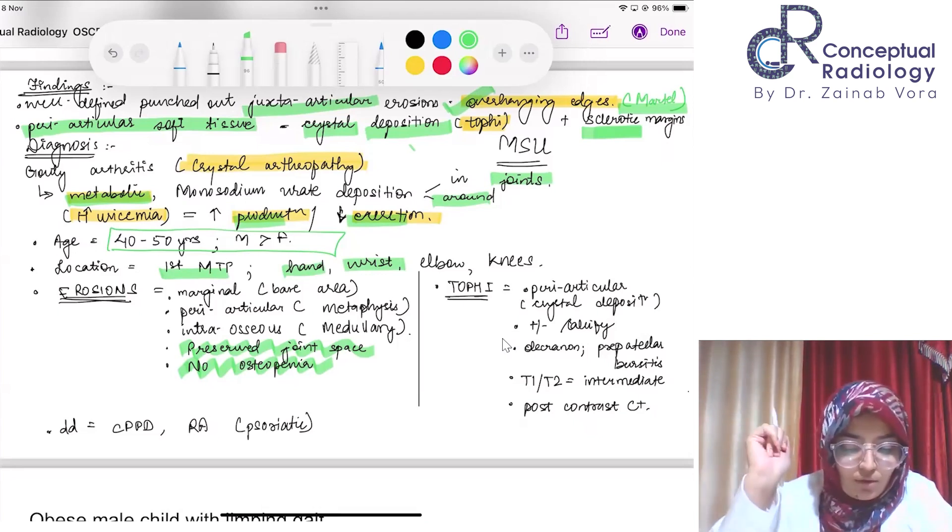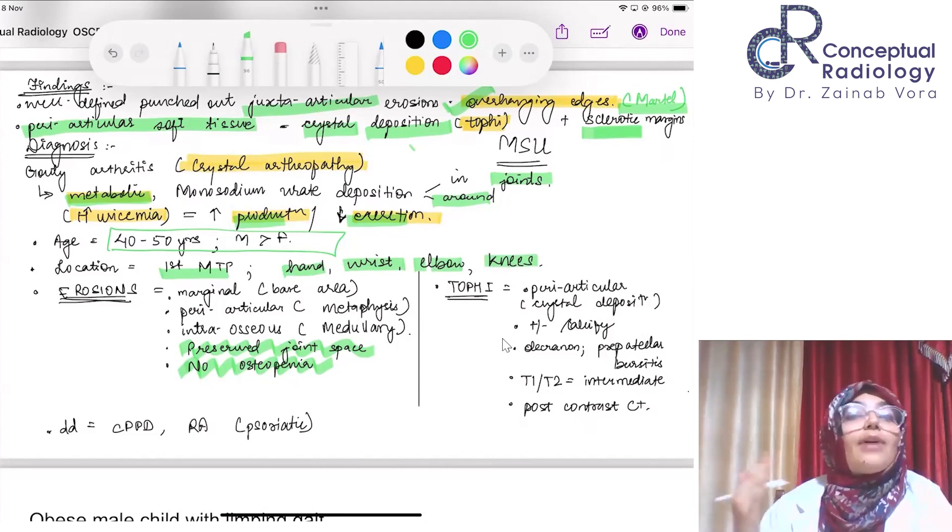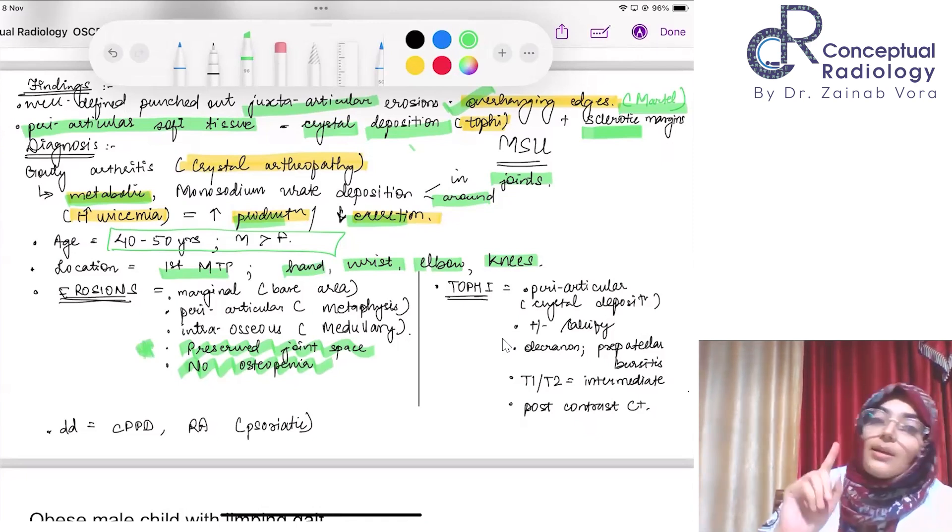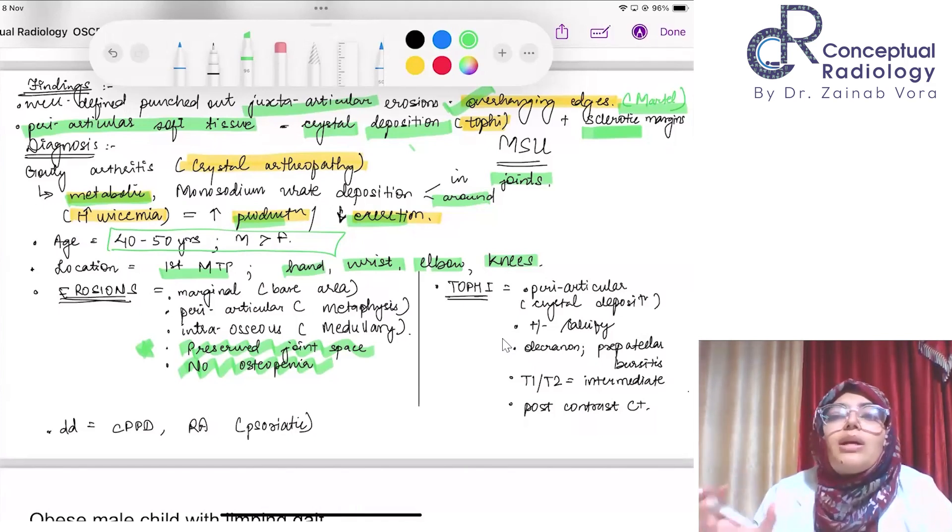Characteristics of erosions: first is marginal, bare area, periarticular, may go up to the level of metaphysis. Erosions are not just happening in and around the joint but may extend to the metaphysis. They're progressive and intraosseous medullary involvement can also be there. Two very important things: number one is preserved joint space. In osteoarthritis, there is narrowing of joint space, destruction of articular cartilage. But here the joint space is preserved because the articular cartilage is not the prime target.